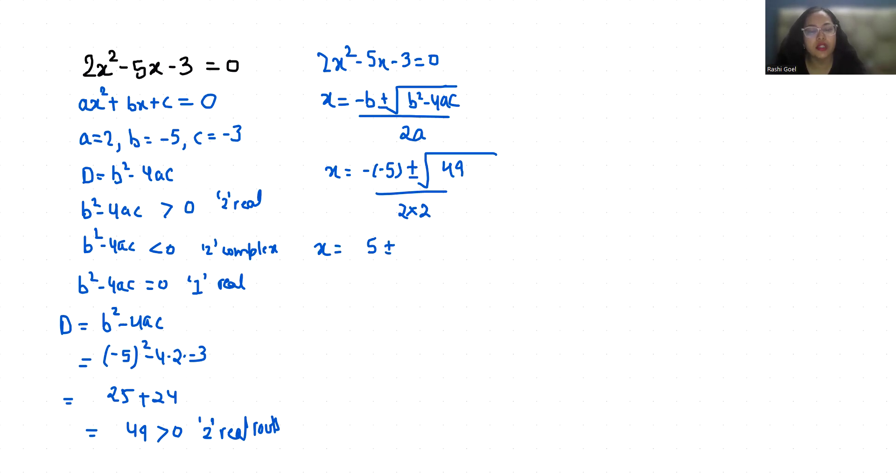x₁ = (5 + 7) / 4 = 12/4 = 3, and x₂ = (5 - 7) / 4 = -2/4 = -1/2. These are the two real roots.